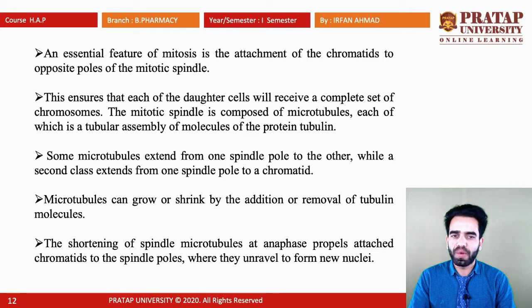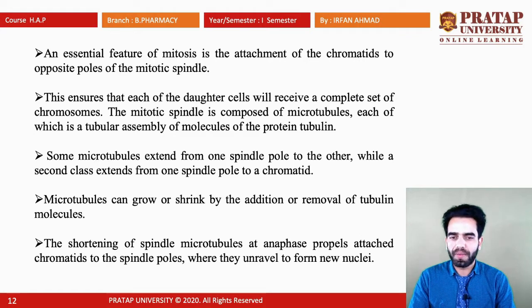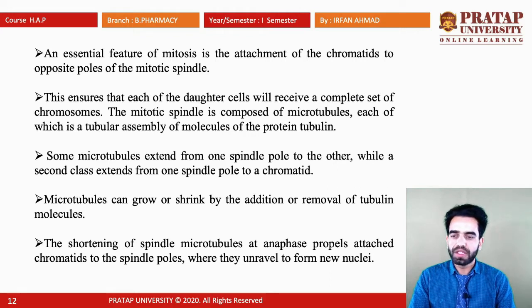Some microtubules extend from one pole to the other pole, while some extend from a spindle pole to a chromatid — so microtubules go from pole to pole or from pole to chromatid. An important characteristic of microtubules is that they can grow by addition of tubulin molecules and shrink by removal of tubulin molecules. Both growth and shrinkage require tubulin protein.